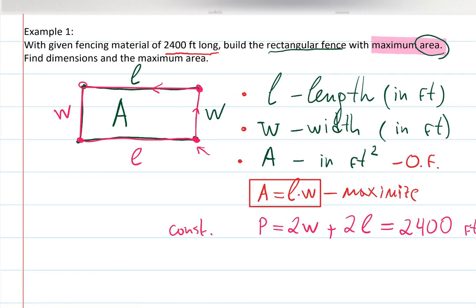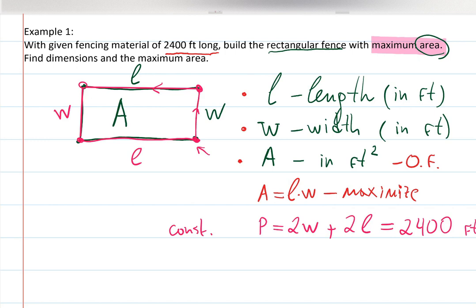That's my constraint — basically a restriction. I'm done building the system I mentioned at the beginning: the first equation is the objective function (area), and the second equation is the constraint (perimeter = 2400).